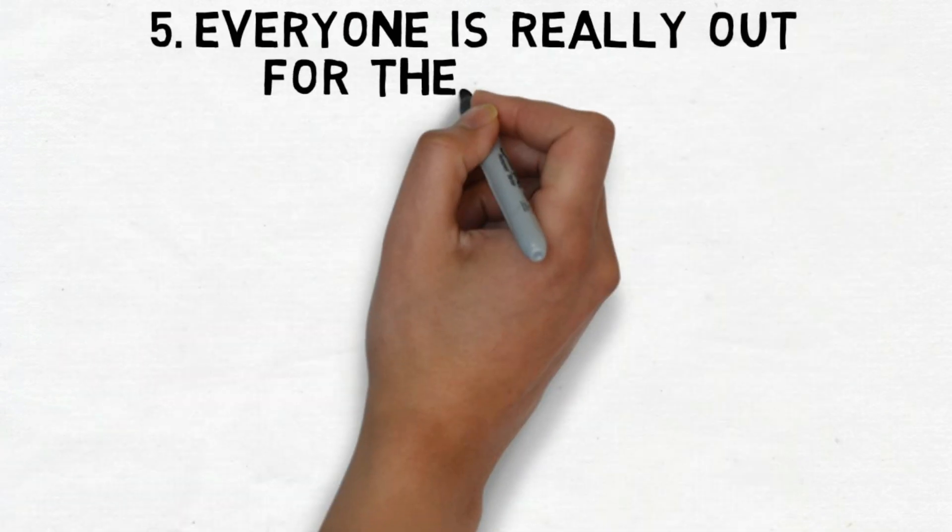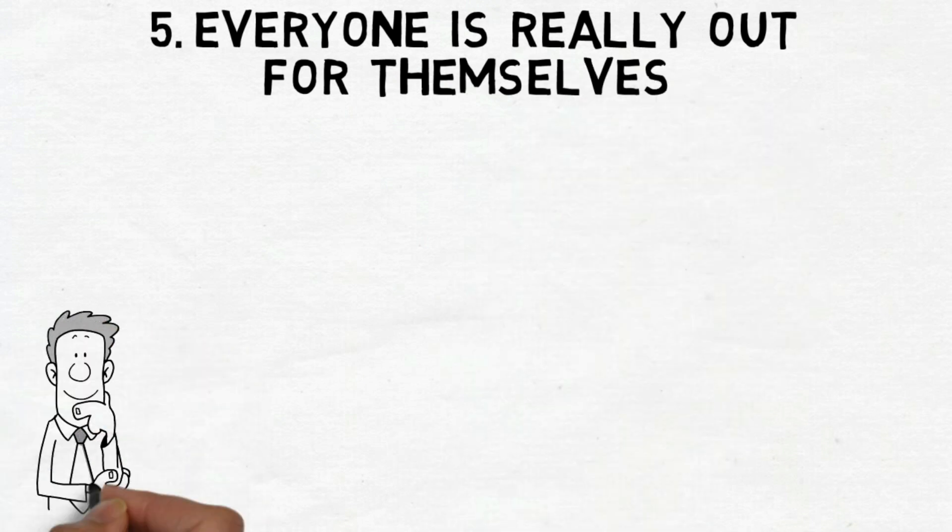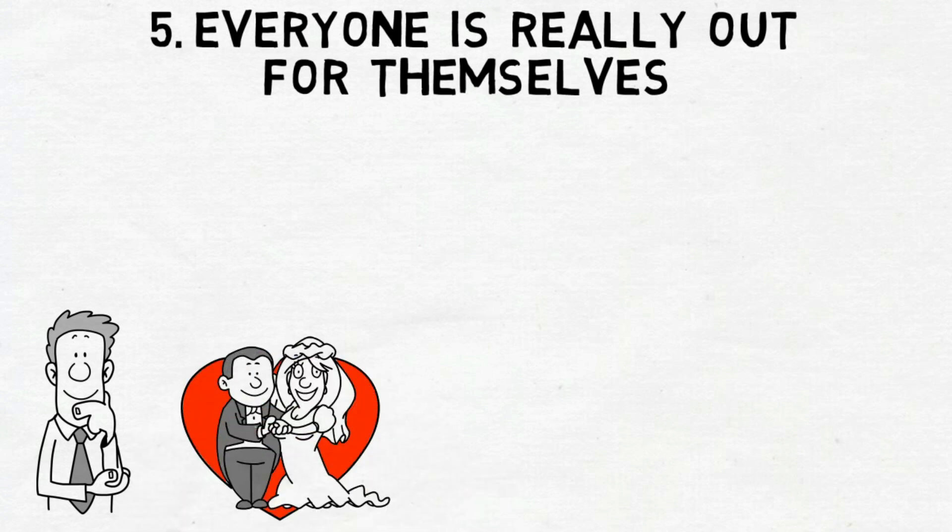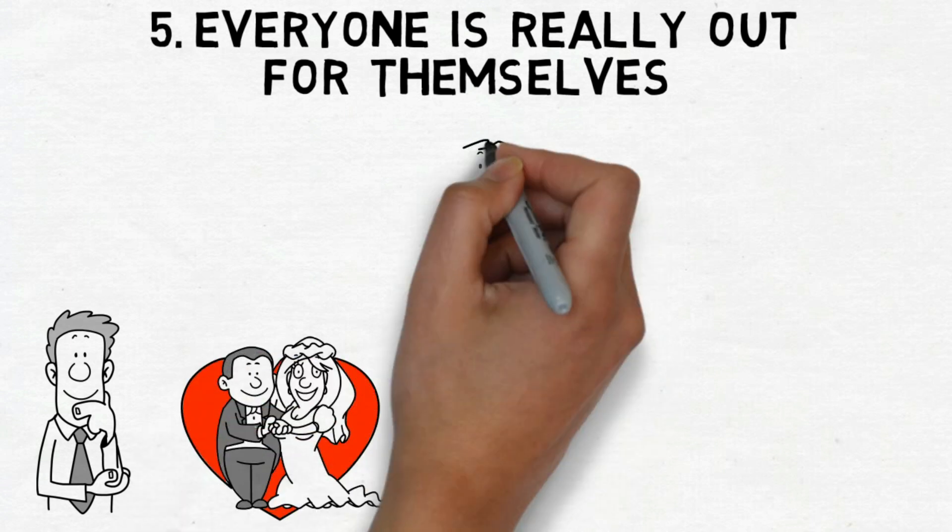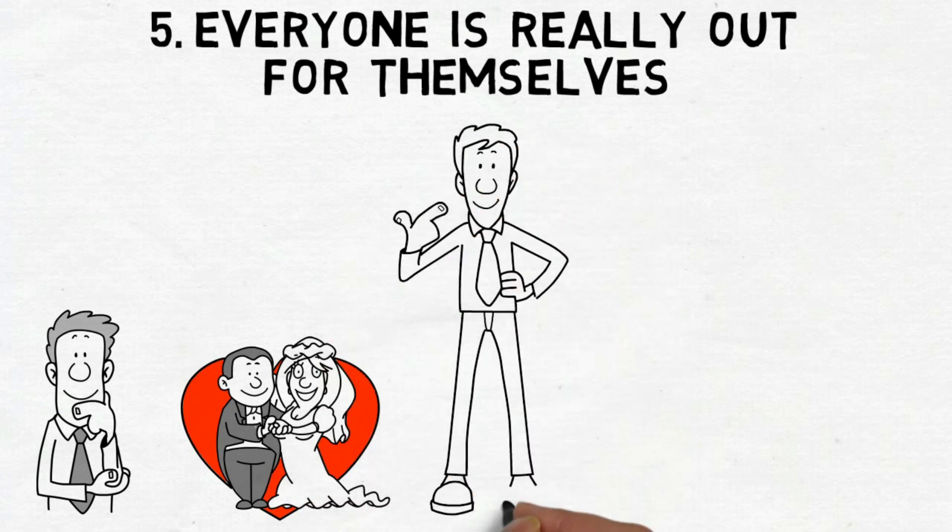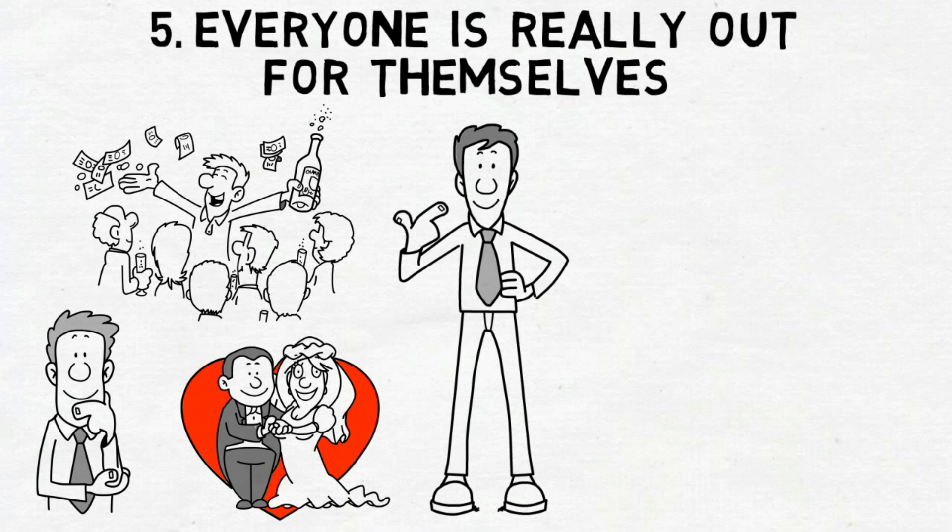Number 5. Everyone is really out for themselves. Everyone sees themselves as the main character in their life, wanting to be with their dream partner and live happily ever after. We all navigate life from a first-person perspective, and from the moment of our birth, our own experiences take center stage. Self-preservation and success are natural priorities.